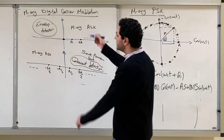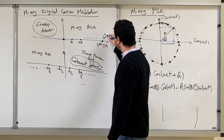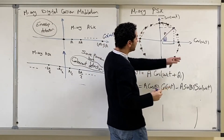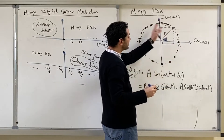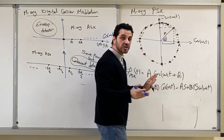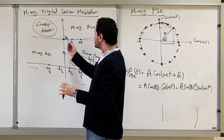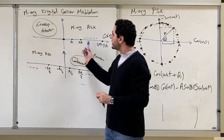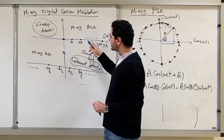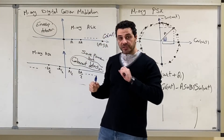Previously we saw that in ASK we are transmitting symbols in the direction of the cosine, and in PSK we are transmitting symbols on a circle where the amplitude is constant and we are changing only the phase. Some people noted that in ASK we are using only one dimension out of two dimensions — we have a two-dimensional figure but we are transmitting symbols only on one dimension. This might not be efficient.